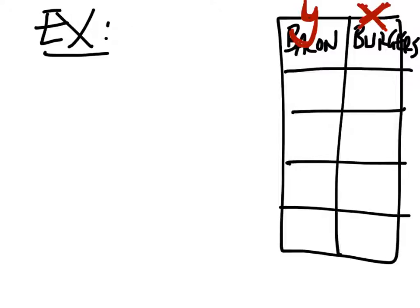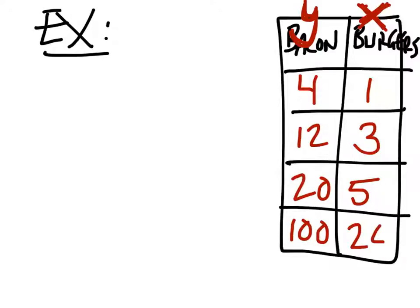So, let's say we've got, I don't know, you want four pieces of bacon for each burger, right? Well, let's look, then, so if I had 12, then I should have 3, and 20, then 5, and 100, and 20, right?